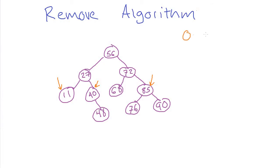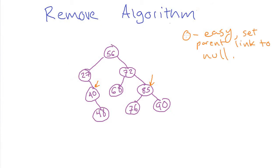In the zero case, this is easy. To remove this 11 node here, all we have to do is to set the 27 node's left child to null, and that'll leave the tree like this. That one is relatively easy — we just set the parent's link, which is linking to the node we want to remove, to null. Then the garbage collector will come along and get rid of it. So the number of children is the determining factor here, and zero is pretty easy.